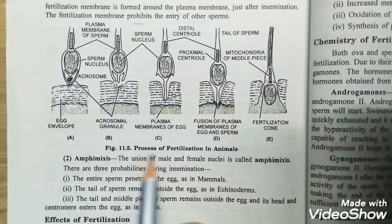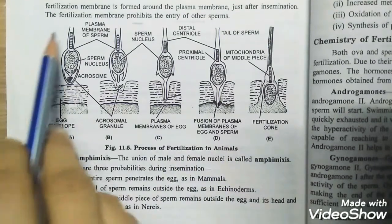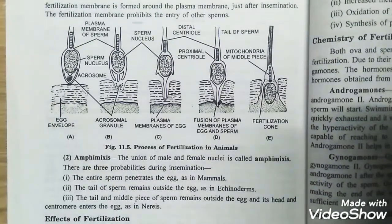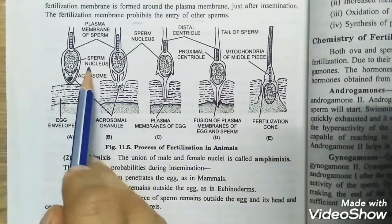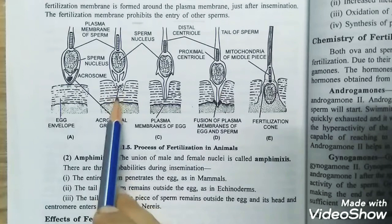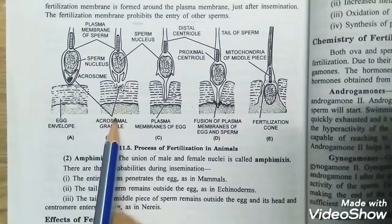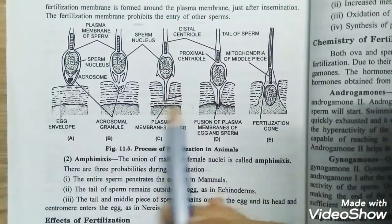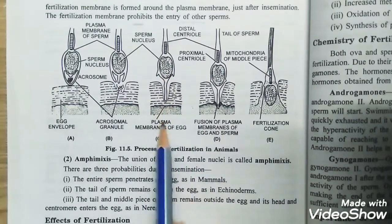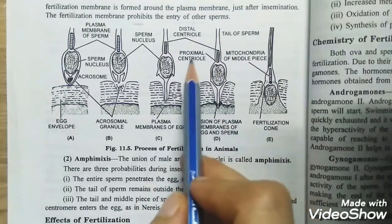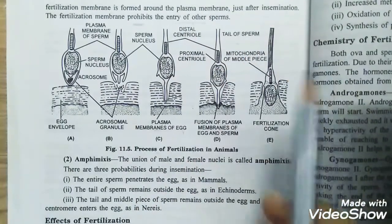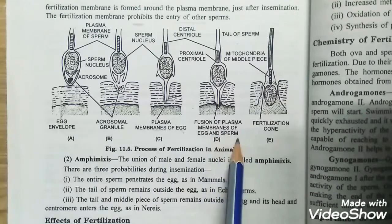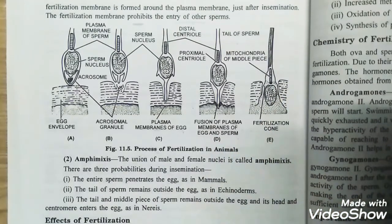Here is the diagram for the process of fertilization in animals. The first diagram shows the sperm structure and the upper part of the egg. We can see the egg envelope, the acrosome, the sperm nucleus, and the plasma membrane of the sperm. After this, the acrosome releases by bursting and acrosomal granules fill inside the ovum. Then the acrosomal tubule forms — a tube entering the plasma membrane of the egg. The distal and proximal centrioles, the tail of the sperm, and the mitochondria of the middle piece are also shown. Finally, fusion of the plasma membranes of egg and sperm occurs, and a fertilization cone forms.